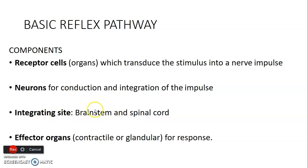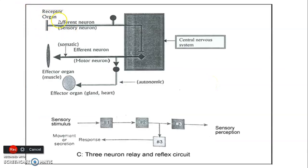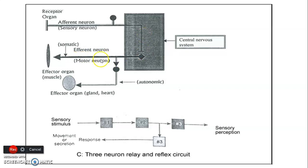Then we have the integrative site, which is either the brainstem or the spinal cord, and effector organs, which could be muscle. We have free nerve endings that sense temperature, and that's your afferent neuron that carries that information to the CNS — it could be the spinal cord or brainstem. Then the efferent neuron carries information to the muscles, which are the effector organs. That's how our reflex pathway occurs.